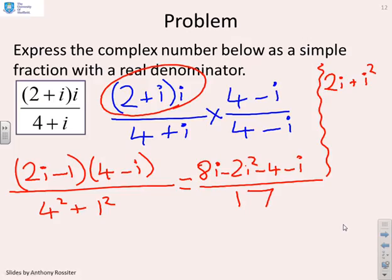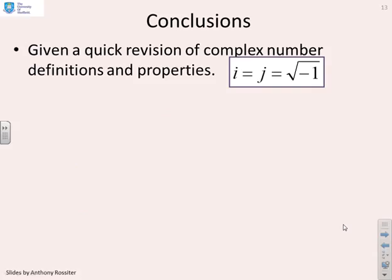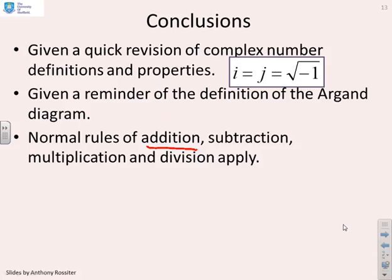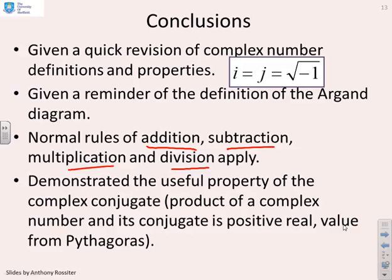In conclusion, we've given a quick revision of complex number definitions and properties: the definition of the Argand diagram, a reminder that normal rules of addition, subtraction, multiplication, and division apply, and we've demonstrated the useful property of the complex conjugate — that the product of a complex number and its conjugate is positive real, which can be used to simplify divisions.